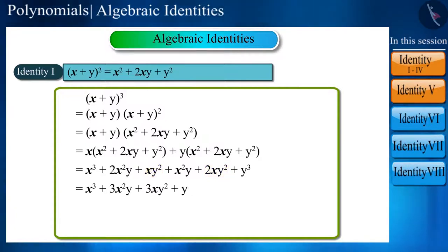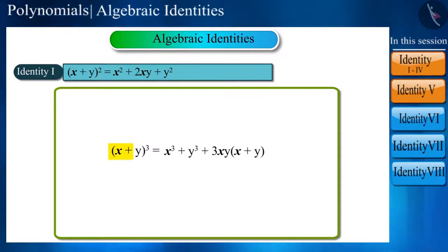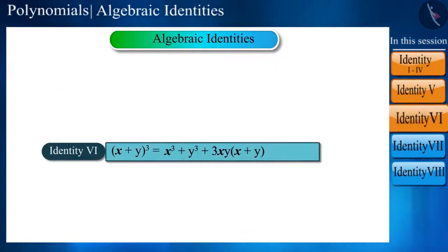Or you can write it like this as well: (x + y)³ = x³ + y³ + 3xy(x + y). This is Identity 6.